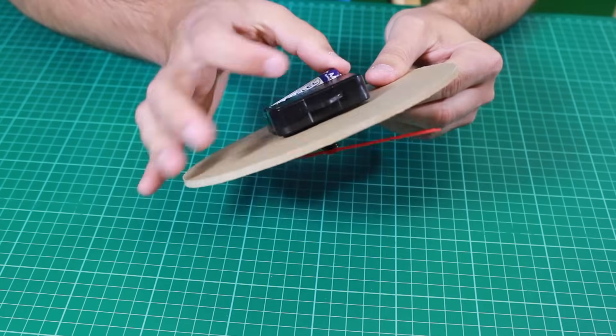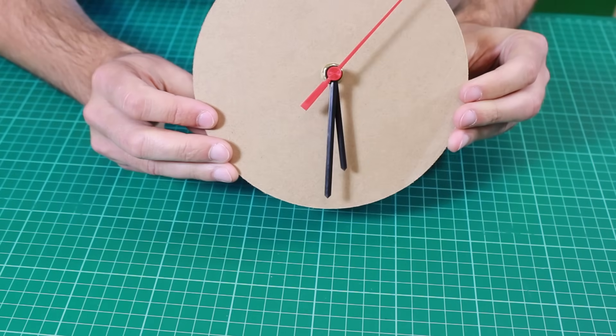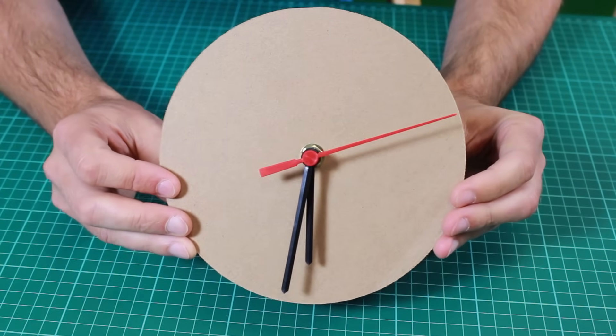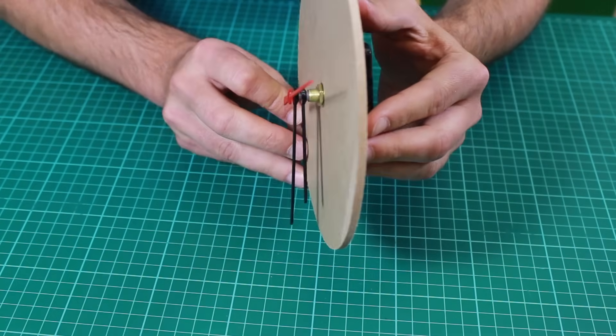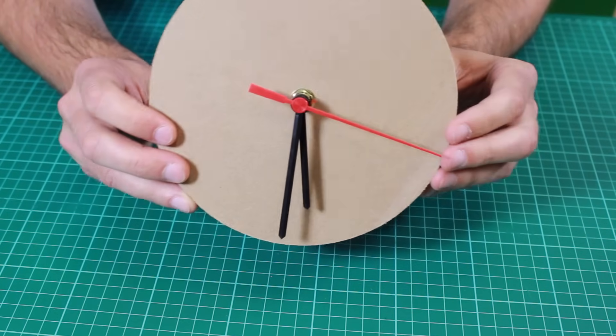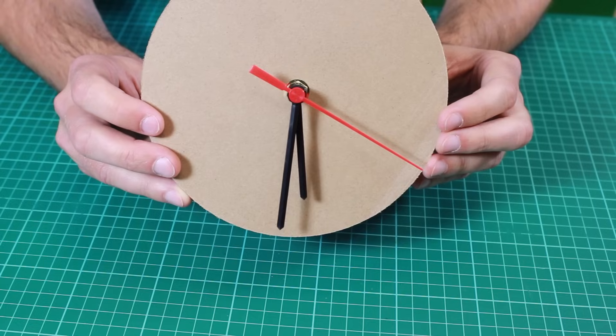Then when we put the battery in, we can see the second hand moving. You can see that from the side. There we have it. A fully assembled clock movement onto a clock face.